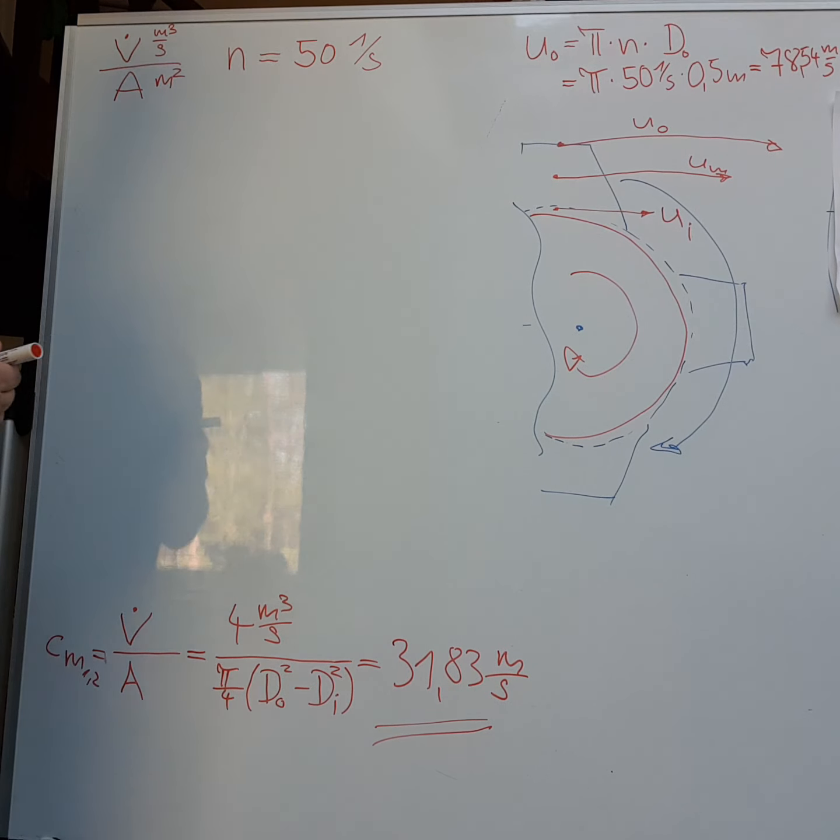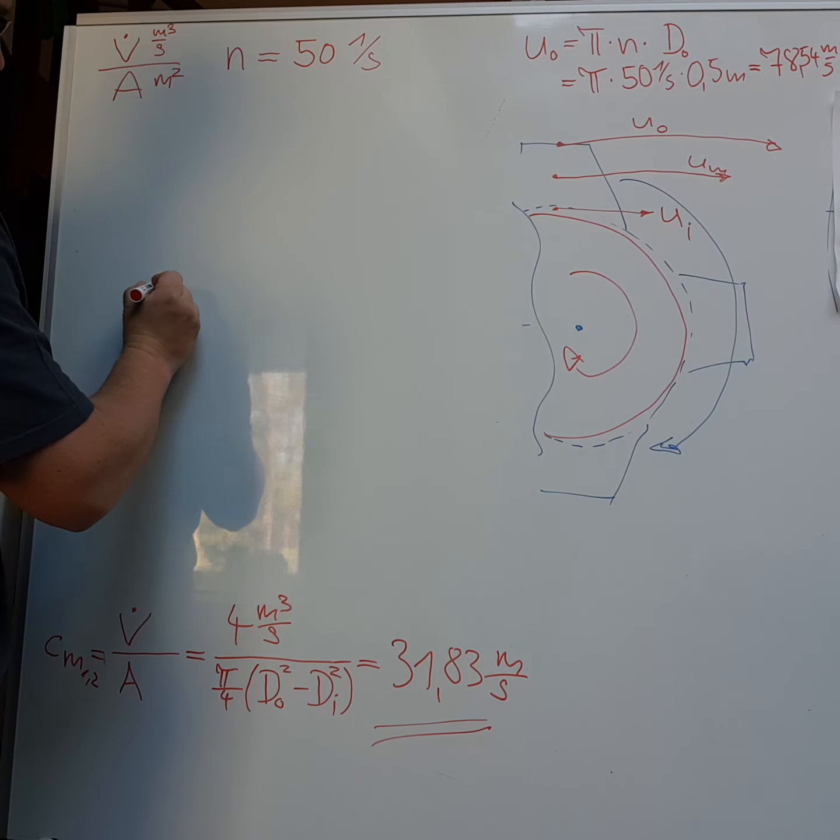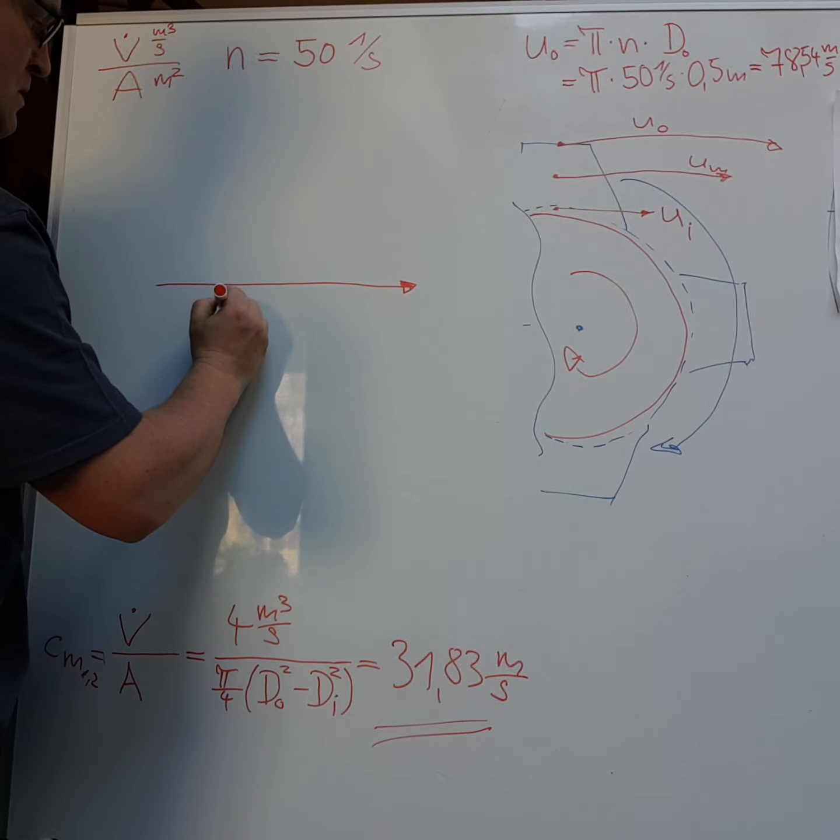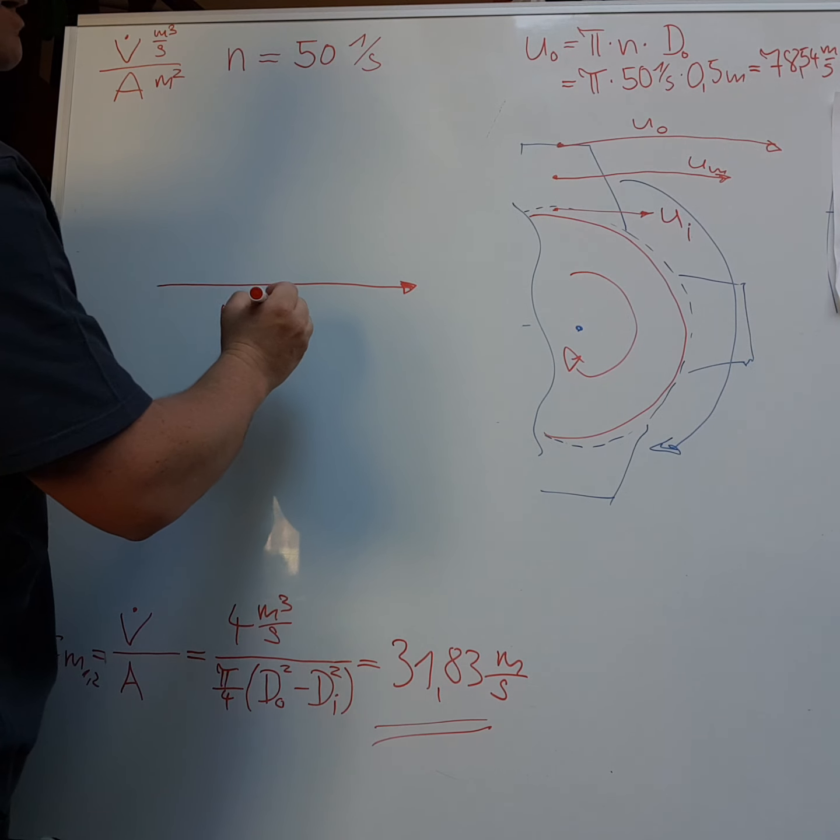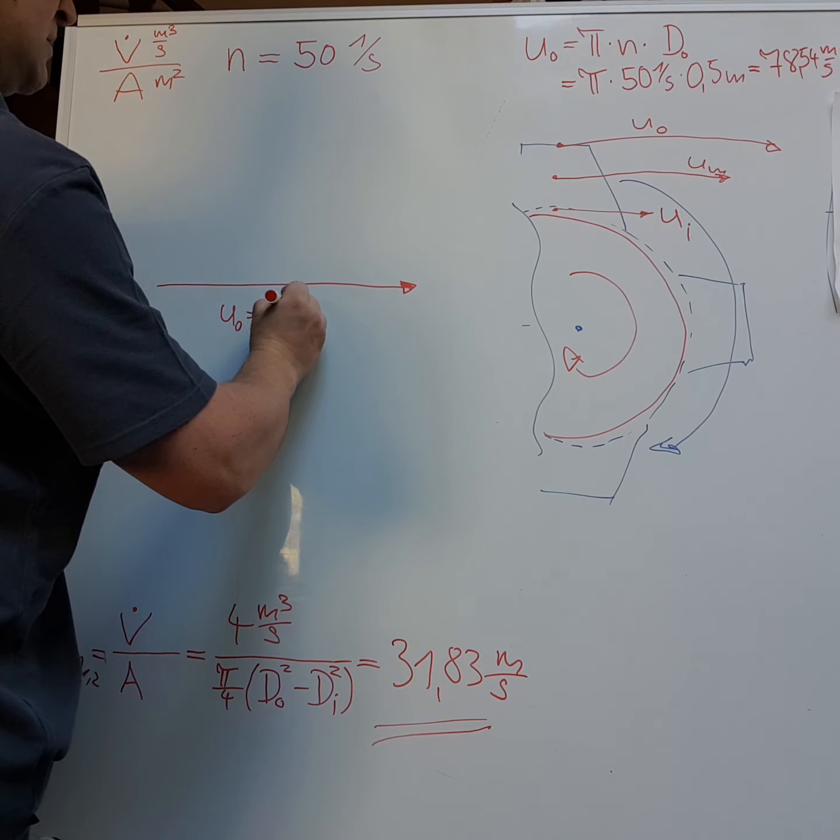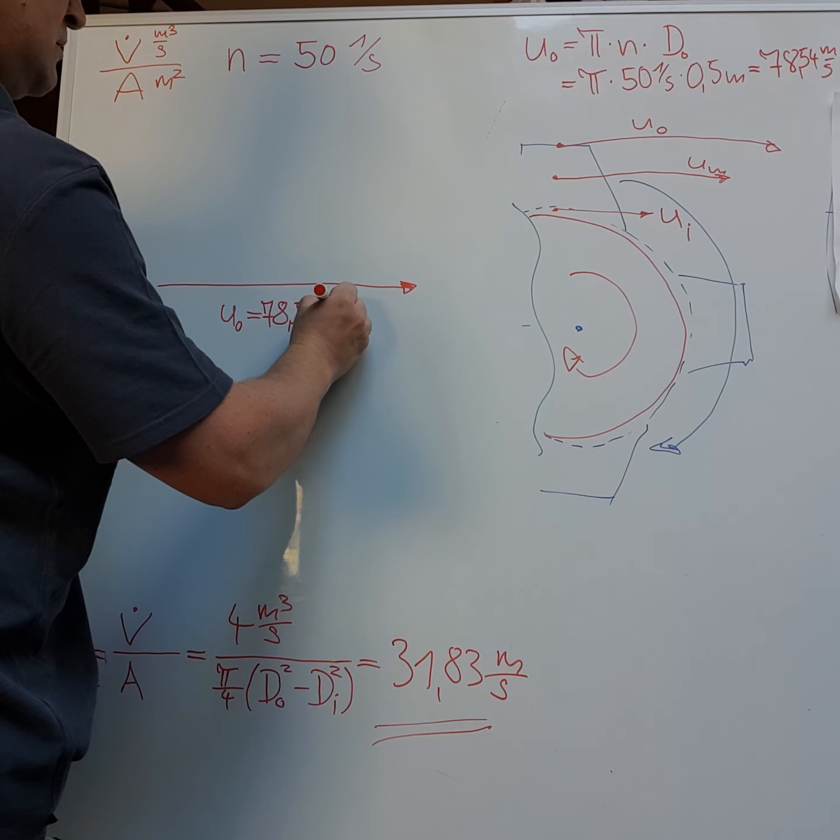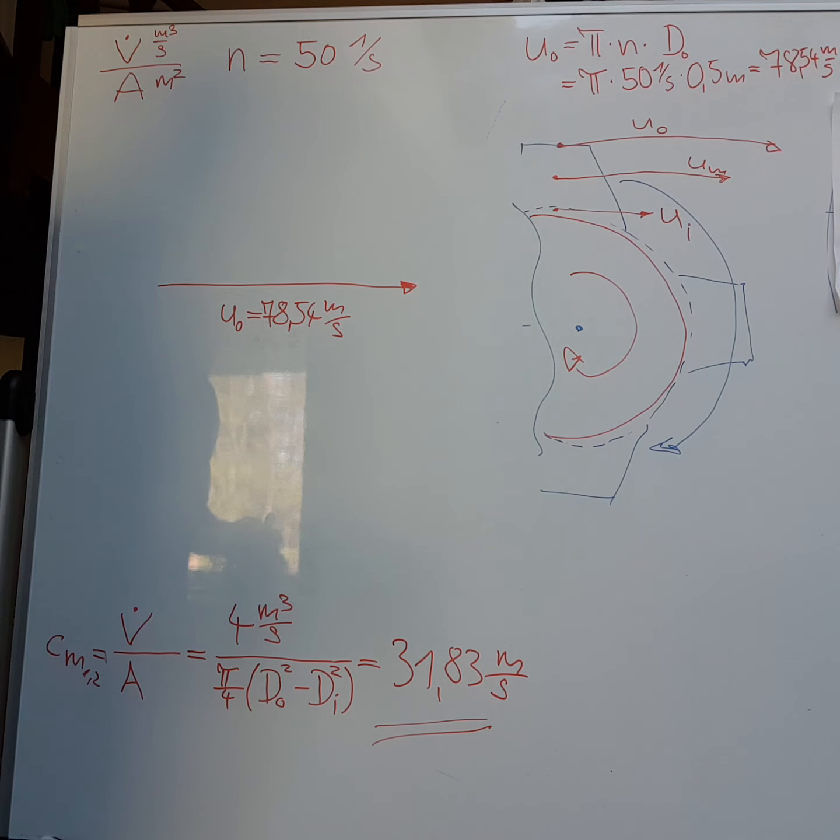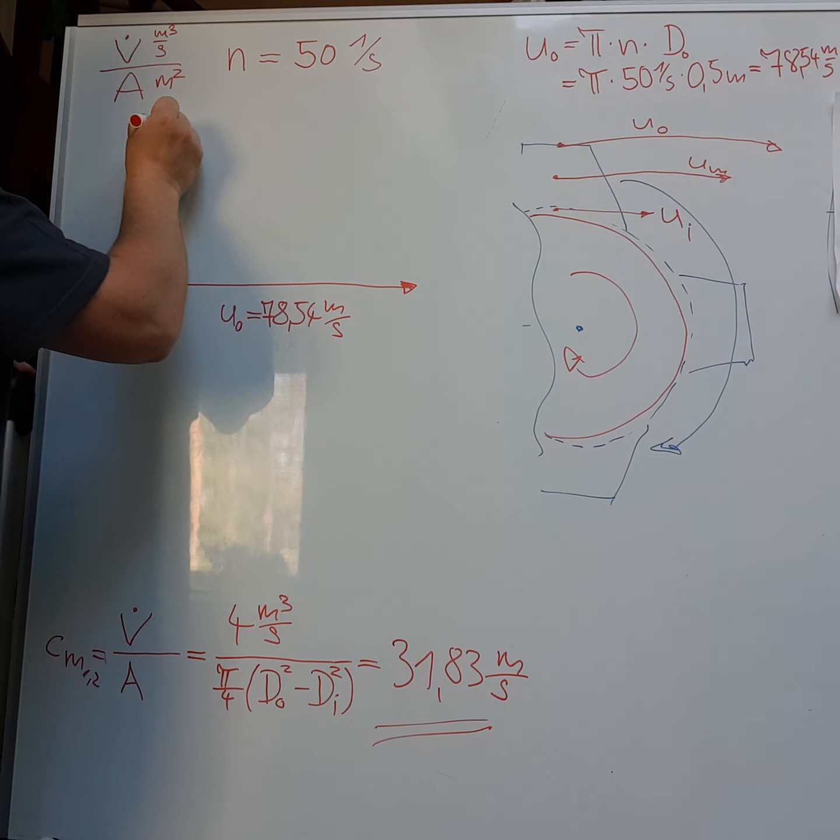We have here this U for the outer region. This is our position, U out. It was about 78.54 meters per second. And we have our C, our mean velocity.